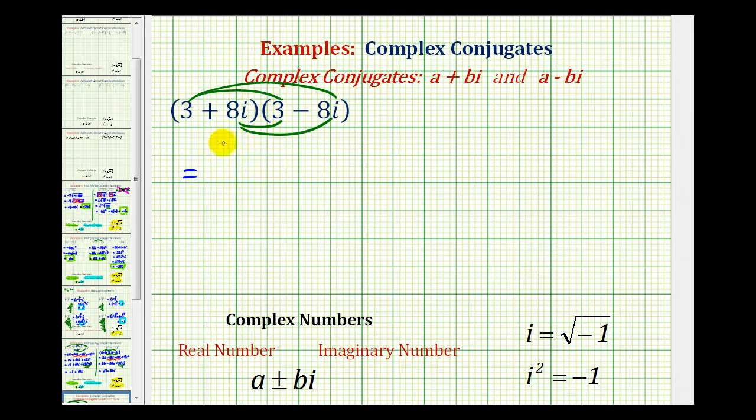So three times three is equal to nine. And then we have three times negative eight i. That's going to be negative 24i or minus 24i. So there's the first two products.